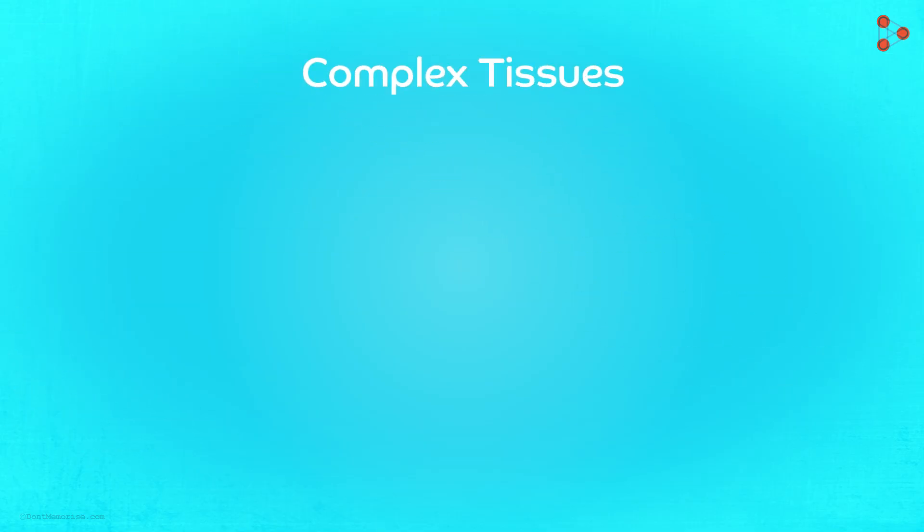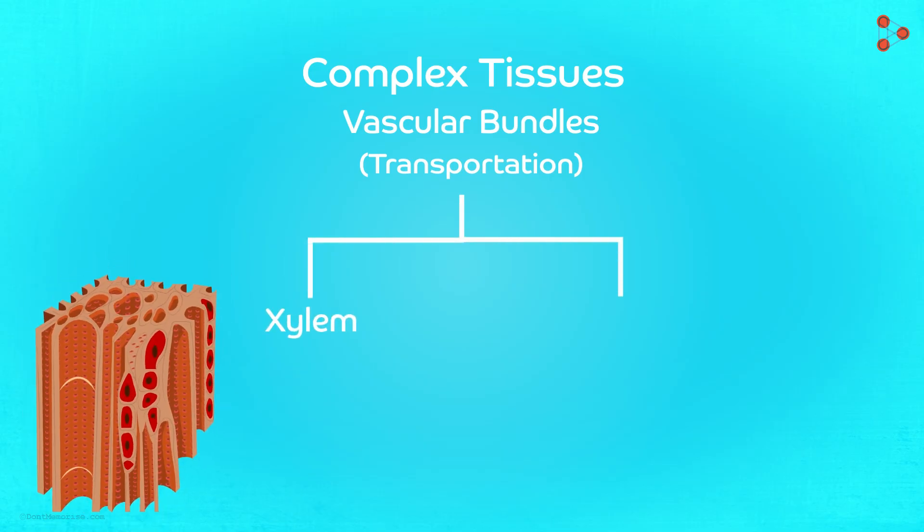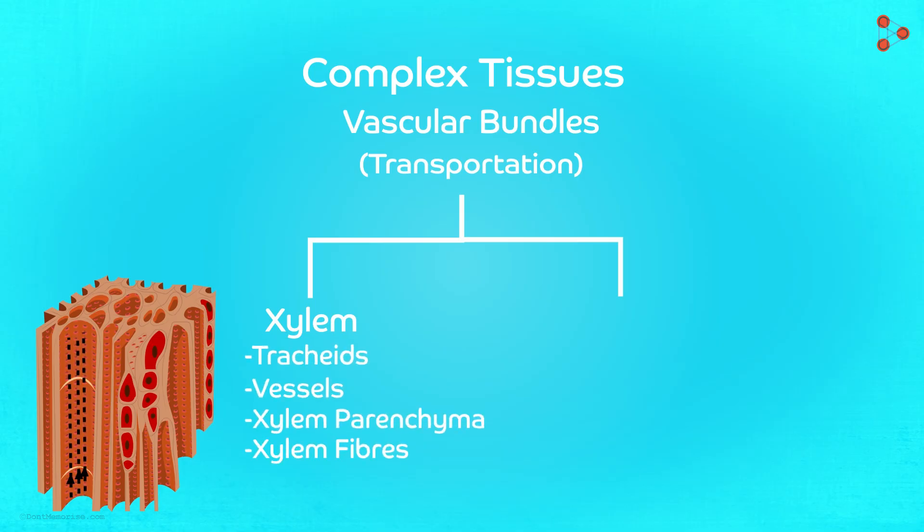Here we have the vascular bundle system that takes up the responsibility of transportation. So for transporting water and minerals in only the upward direction, we have the xylem. Xylem is made up of four major components: tracheids, vessels, xylem parenchyma and xylem fibres.